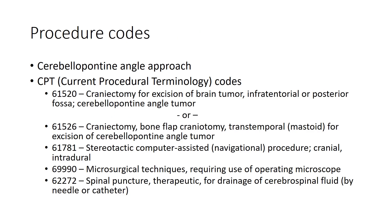Next we need to select appropriate procedural codes for the cerebellar pontine angle approach. The current procedural terminology directory gives us two options for cerebellar pontine angle tumor. The first is 61520, which is a typical suboccipital craniectomy performed primarily by a neurosurgeon with approach through the cerebellar pontine angle along the petrous face for resection of a tumor. If a transmastoid or transtemporal approach were utilized with the assistance of an ENT surgeon, then CPT code 61526 would be selected.